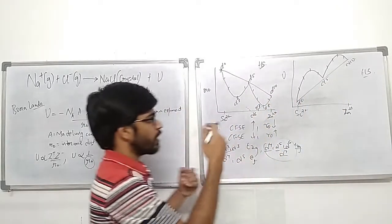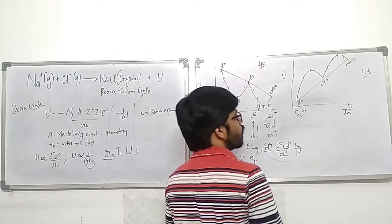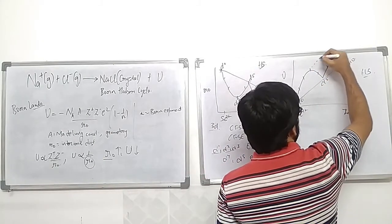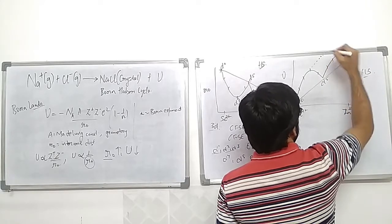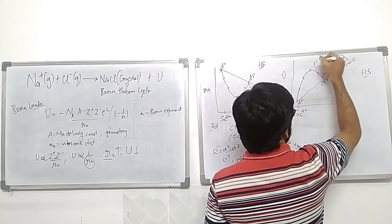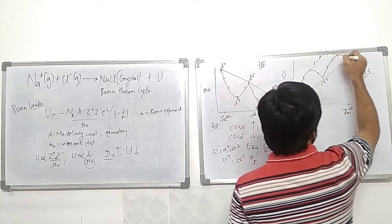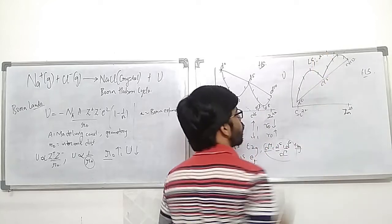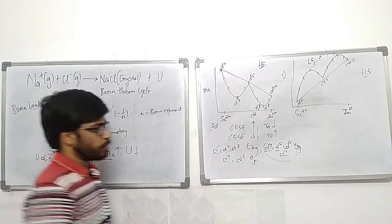If this is true for interionic distance, it should also be reflected in lattice energy, and indeed it is. For low spin complexes, the lattice energy continues increasing through D4, D5, D6, then comes back down through D7, D8, D9 to D10. The dotted line represents low spin and the solid line represents high spin.